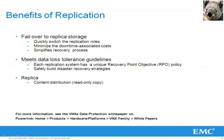Users can configure a unique Recovery Point Objective policy per replication pair. With this configurable RPO, users can safely build DR strategies that meet various data loss tolerance levels. If a DR event occurs, users can failover to the replica storage resource, knowing that the data loss between the replication pair is tolerable under the organization's guidelines. Having a replica of your data can be beneficial not just in disaster recovery situations — a copy of the source content can be distributed, lessening the IO traffic going to one VNX-E system. For more information about remote replication, refer to the VNX-E Data Protection White Paper on PowerLink.